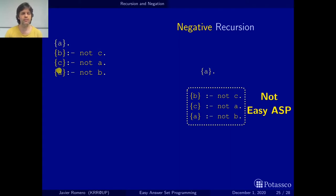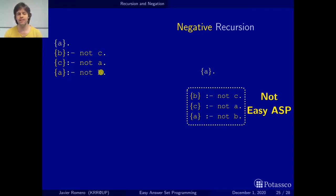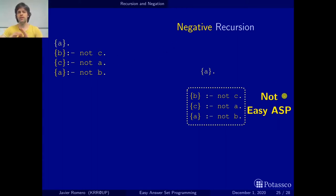We have some predicates — now all of them — that occur in the head of some rule in this set of recursive rules and they also occur negated in the bodies of some of these rules. So this is negative recursion and this is not part of easy answer set programming; we are not going to write programs with this type of recursion.